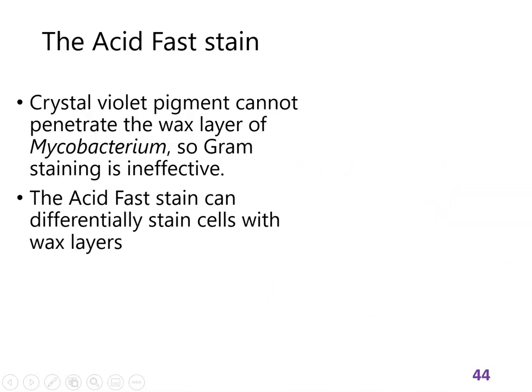The acid fast stain looks different from the gram stain, but it's the same basic idea — acid fast cells will hold on to the stain and any others will not. It stains that waxy layer and they keep the stain in it. The cells that don't have the waxy layer lose it, become invisible, and you have to counter-stain them to make them visible, just like with the gram stain.